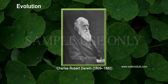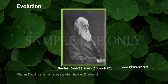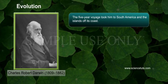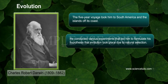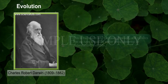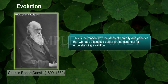Charles Robert Darwin (1809–1882) set out on a voyage when he was 22 years old. The five-year voyage took him to South America and the islands of its coast. He conducted various experiments that led him to formulate his hypothesis that evolution took place due to natural selection. This is the reason why heredity and genetics are so essential for understanding evolution.